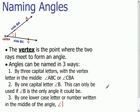The second way to name an angle would be by one capital letter, and that would be angle B. You have to use the vertex letter, and this can only be done when there's only one angle here.